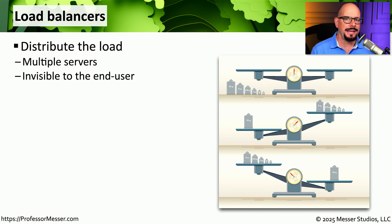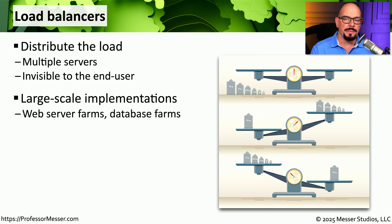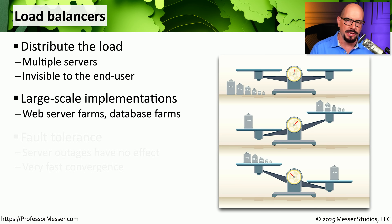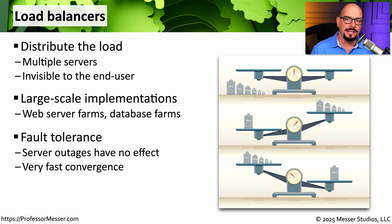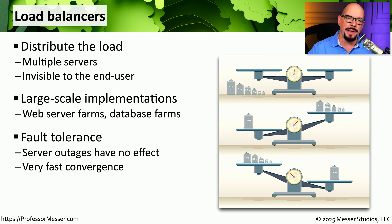One of the ways organizations maintain the uptime and availability of their services is to have those services running on a load balancer. Load balancers connect many different devices simultaneously and share the load across those systems. An organization might build a web server farm with multiple web servers connected to a load balancer, and as incoming requests are received, those requests are distributed evenly across all of the servers. If one server fails, the load balancer automatically takes it out of rotation, and the remaining devices share the load. Once the issue is resolved and the server is returned, the load balancer automatically begins sending requests to it again — all very quickly, with end users having no idea an outage even occurred.